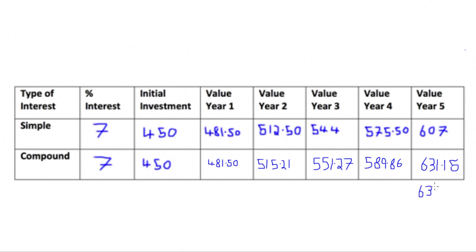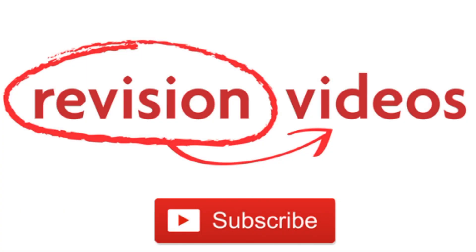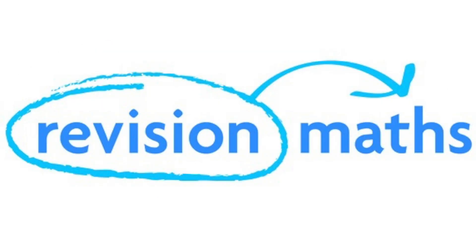To prove this in an exam, we can see that £631.15 in our compound account minus the £607 total of our simple interest account gives us £24.15, meaning we're £24.15 better off in a compound interest account over five years. To work out how much better off we are each year, you can divide this £24.15 by the five year period. Thanks for watching, and subscribe to our channel for more videos, or go to revisionmaths.com for more revision materials.